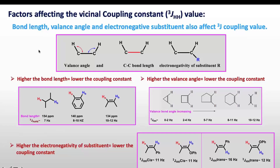The dihedral angle is the major factor affecting the coupling constant, but other factors — bond length, valence angle, and electronegative substituents — can also affect the vicinal coupling. Bond length refers to the length between two carbons. Higher the bond length, lower the coupling constant; as bond length decreases, the value of coupling constant increases.